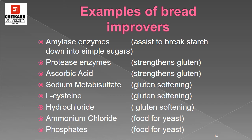Some examples of bread improvers are amylase enzymes and protease enzymes, which help break starch down into simple sugars and strengthen the gluten. Ascorbic acid and sodium metabisulphite also help in strengthening and softening the gluten. L-cysteine hydrochloride acts as a gluten softening agent. Ammonium chloride and phosphates act as food for the yeast.